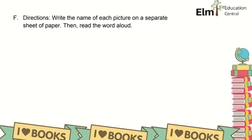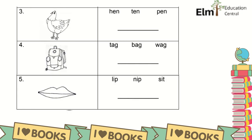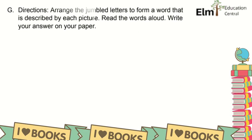Write the name of each picture on a separate sheet of paper, then read the word aloud. Number 1: mop. Number 2: run. Number 3: hen. Number 4: bag. Number 5: lip. Now let's proceed to another activity.